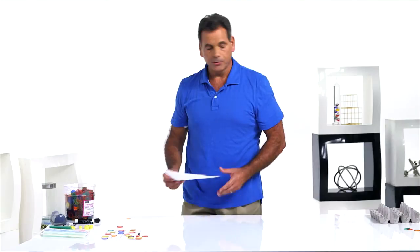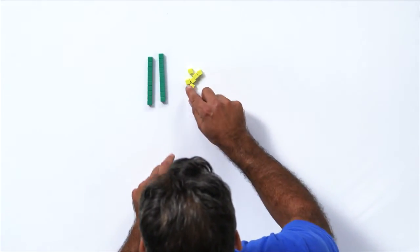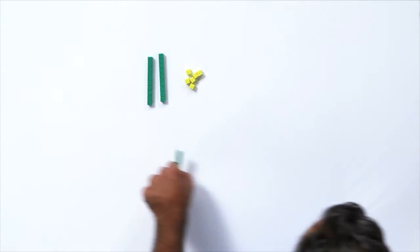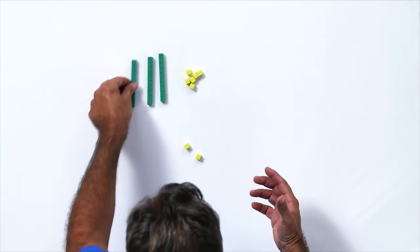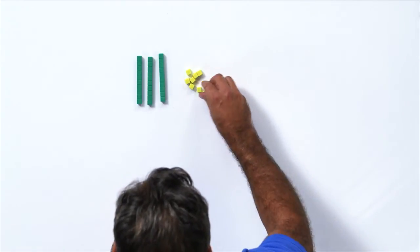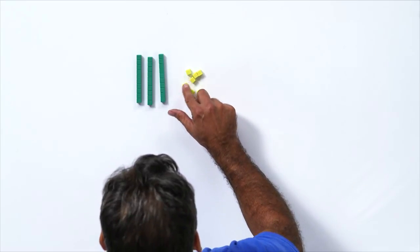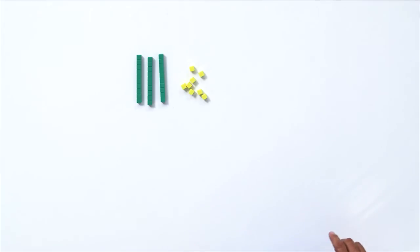And we can use base 10 blocks. Let's do 26 plus 12 using base 10 blocks. 20, 6. 10, 20, 1, 2, 3, 4, 5, 6. And let's build the 12. 10, 2. Now just put it together. Let's put our tens together. Let's put our ones together and count. 10, 20, 30. 1, 2, 3, 4, 5, 6, 7, 8. 26 and 12 is 38.